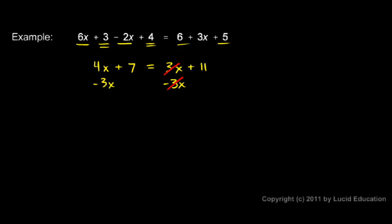So now on the left, look at the 4x and the minus 3x. Those combine to give me 1x, which I just write as x. So I have x plus 7. And on the right, I have 11.